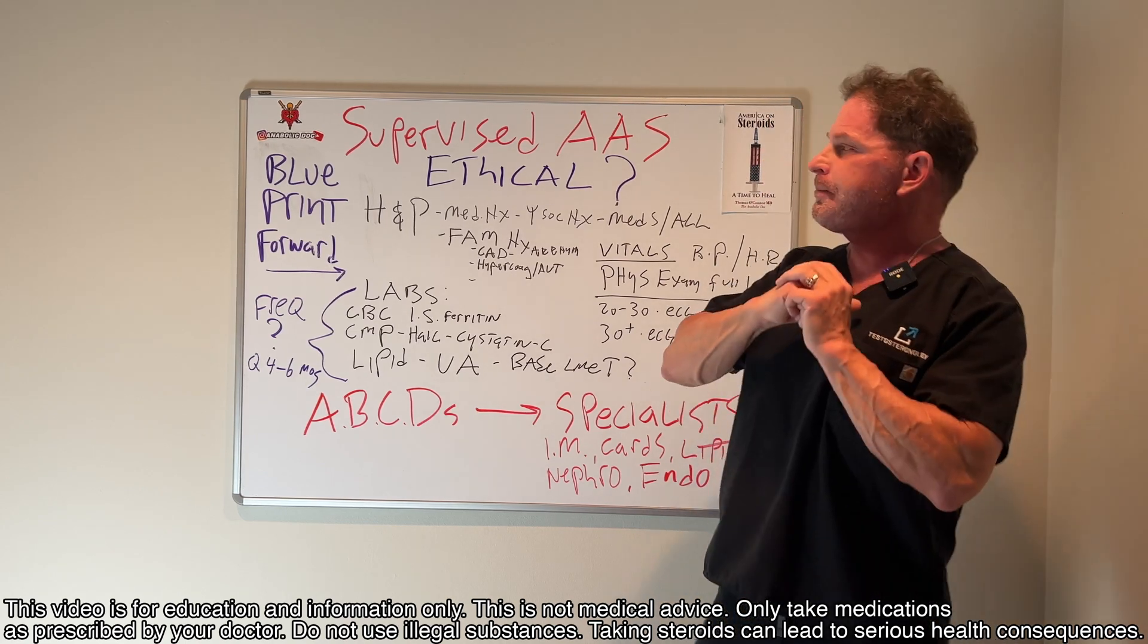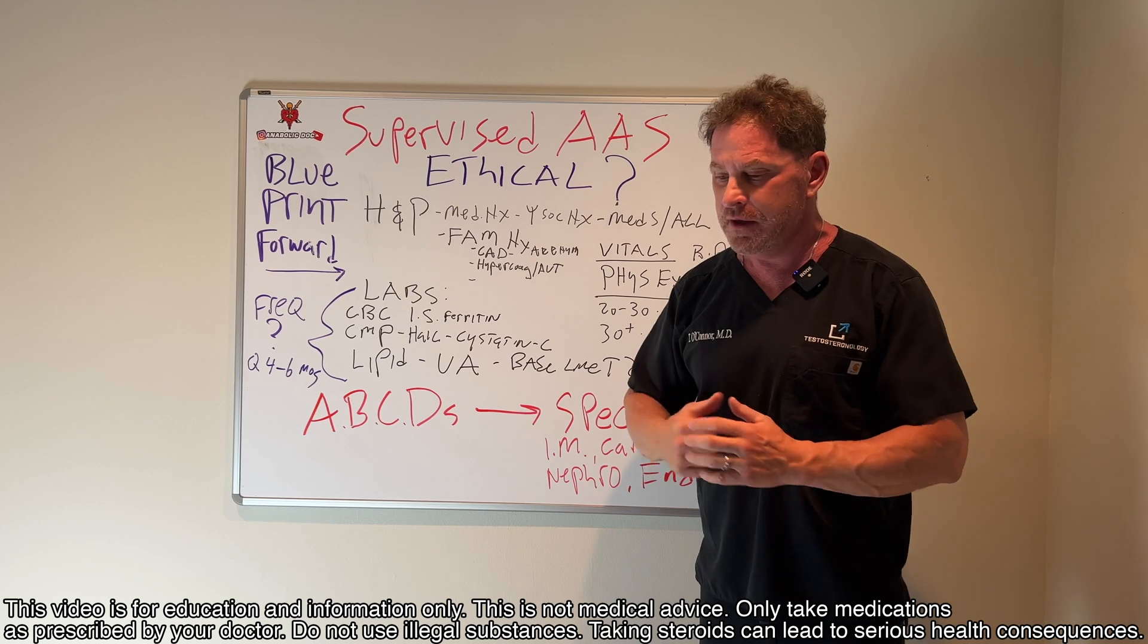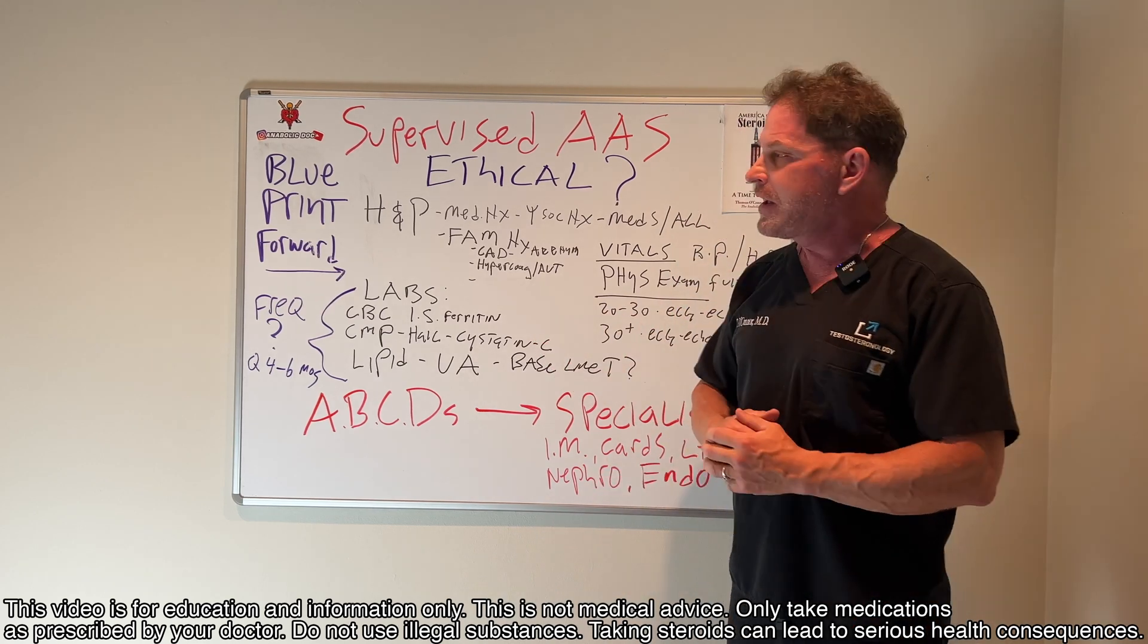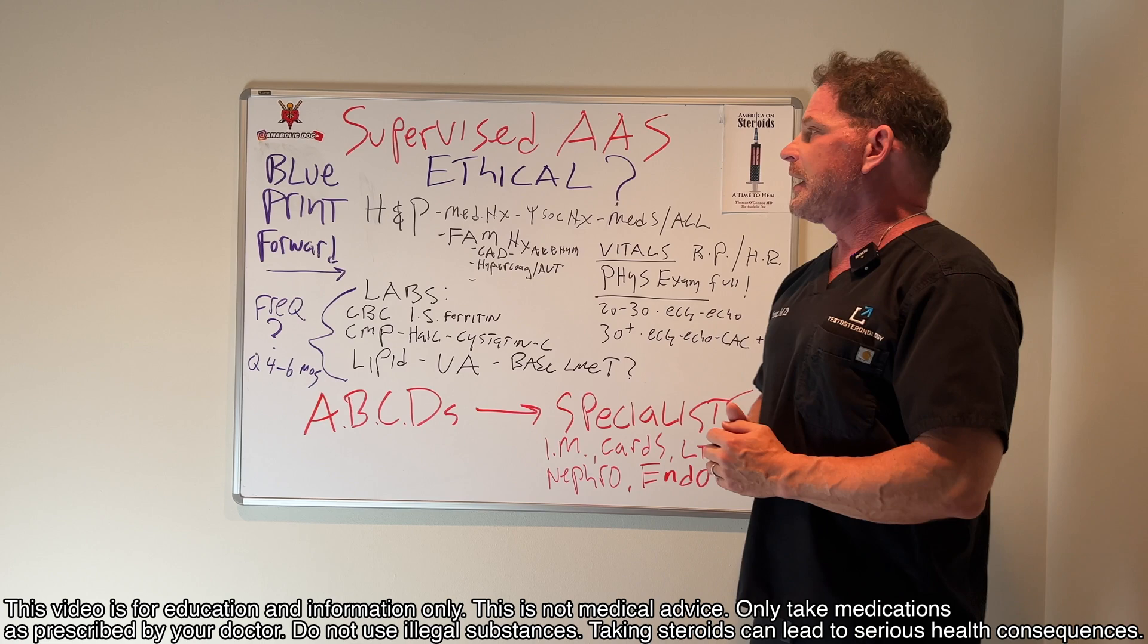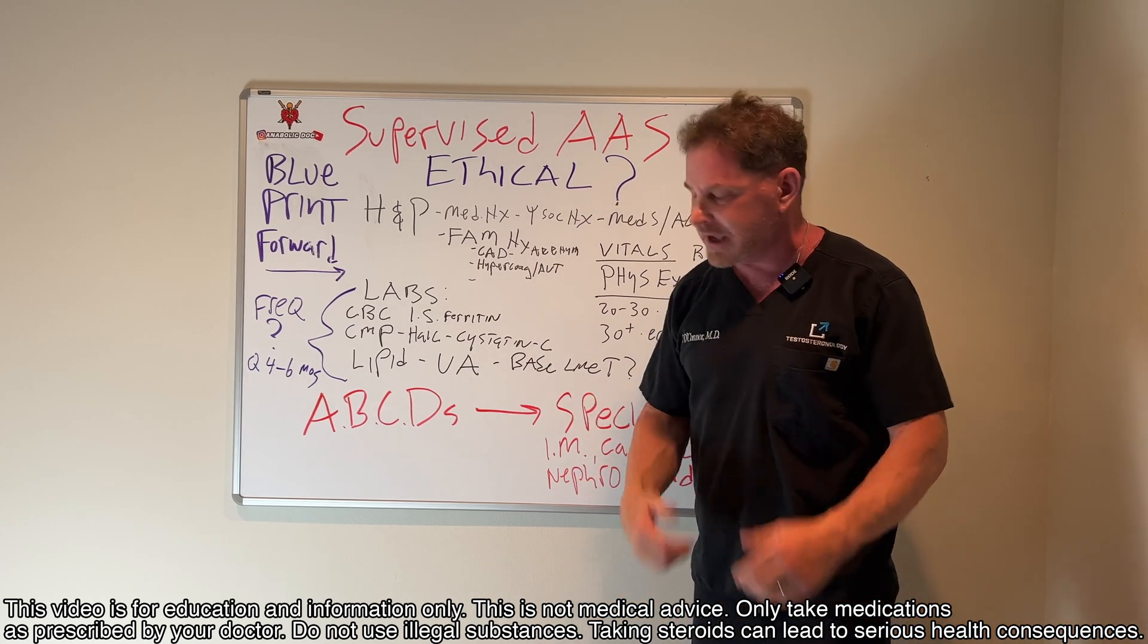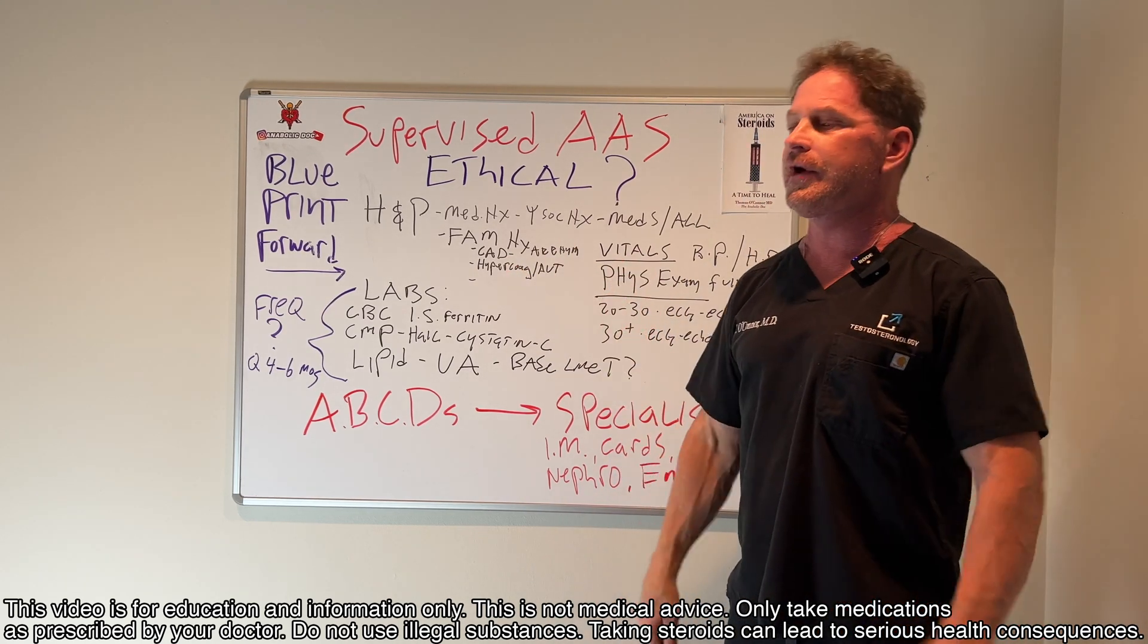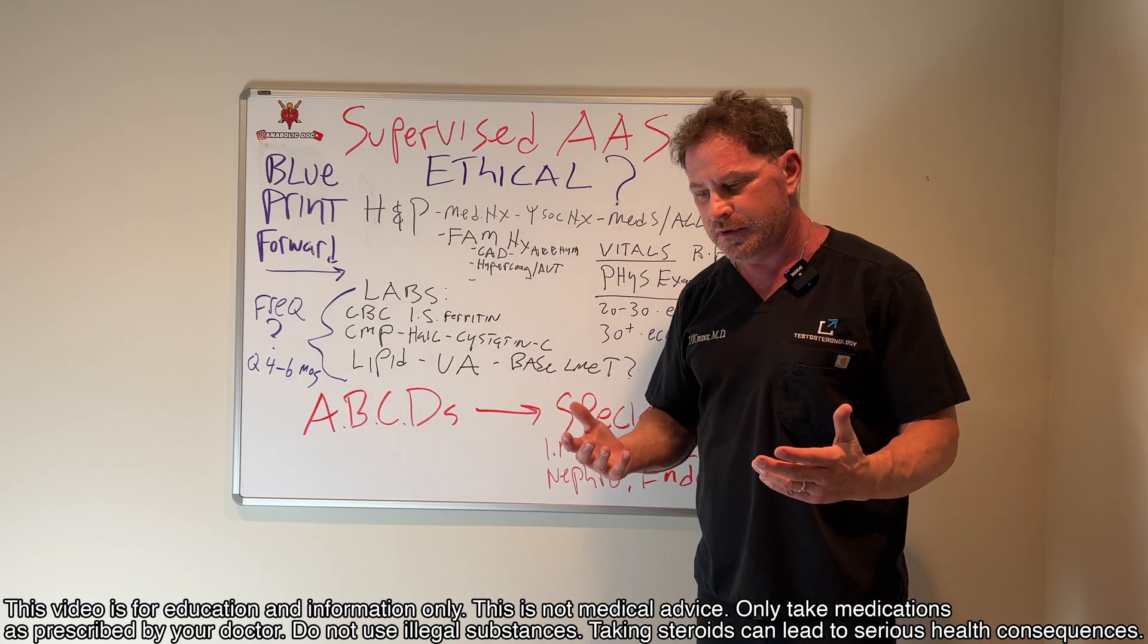We're going to talk today about a blueprint forward, a progressive blueprint forward, because men and women are utilizing steroids by the millions. It's not going to stop. I'm not talking about cheating in the NFL and MLB. These are people that are using steroids, and they love it. They enjoy it. They're adults. They're not children. And they are getting hurt because they're not supervised by medical physicians. Is this the path forward? Is it a blueprint? This is my blueprint. This is what I've constructed today for you. Is it ethical for supervision of anabolic androgenic steroid users?